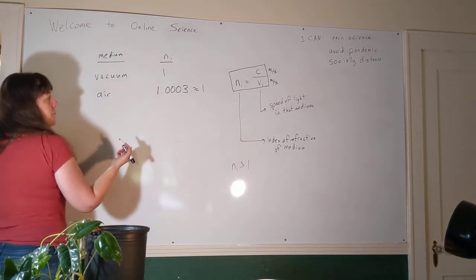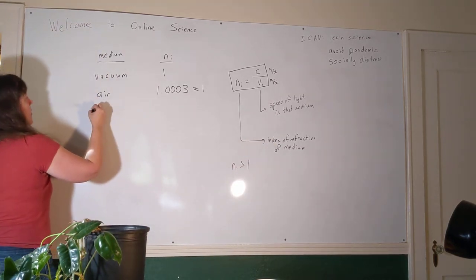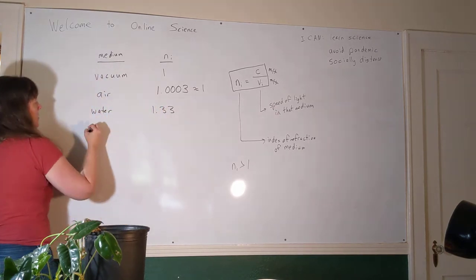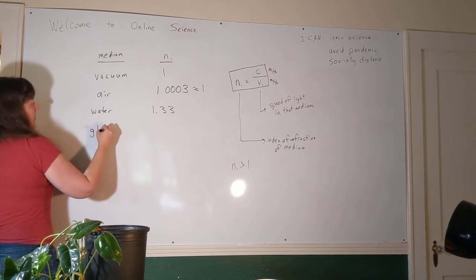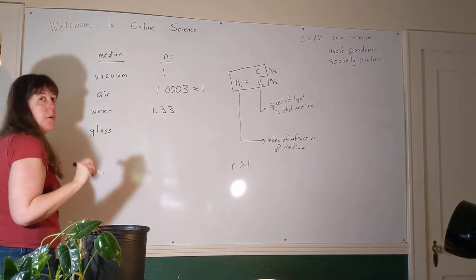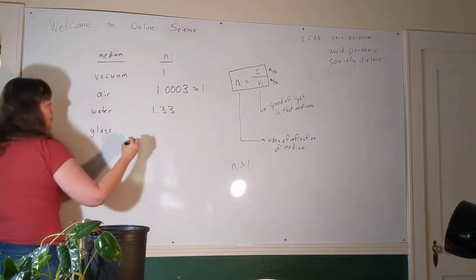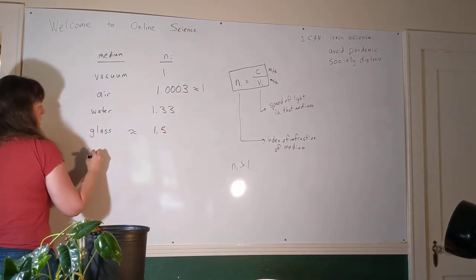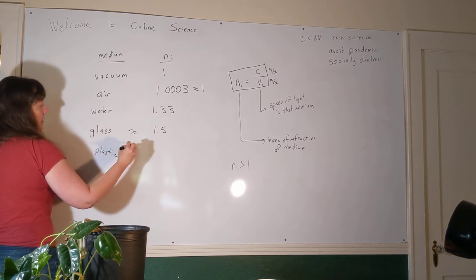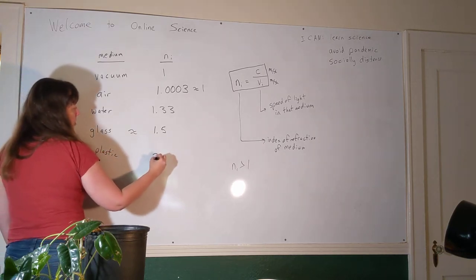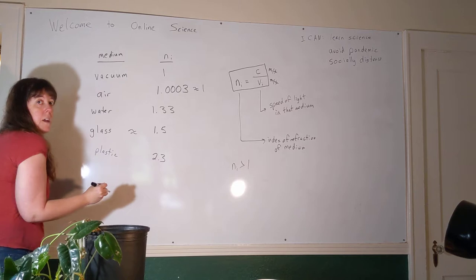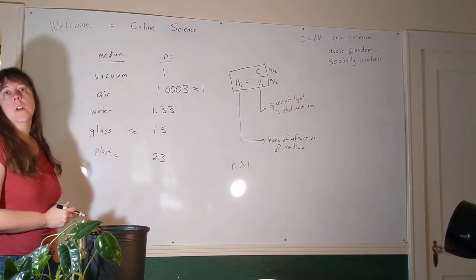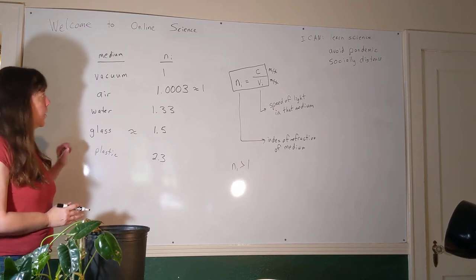Other things you kind of have to look up in a table. Usually water is 1.33. There are lots of different kinds of glass—it's really not fair for me to put glass up here as though it's one substance—but most types of glass are around 1.5. There are plastics that can be around 2.3 or 2.5. There's not a maximum value for n; it can get much bigger than one if it needs to.